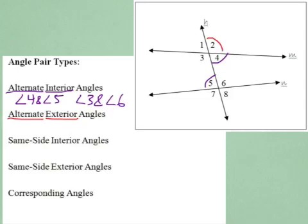Which angle is alternate exterior to angle two? The only other angle that is exterior and also on the opposite side of the transversal is angle seven. Why not angle one? We already have a name for angles one and two — it's a linear pair. We reserve that term since they're adjacent and at the same intersection. We're talking about angles at different intersections. So angle two and angle seven are alternate exterior angles. The other pair of alternate exterior angles is angle one and angle eight.